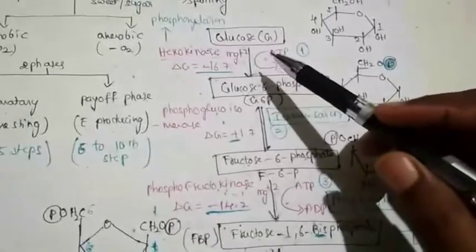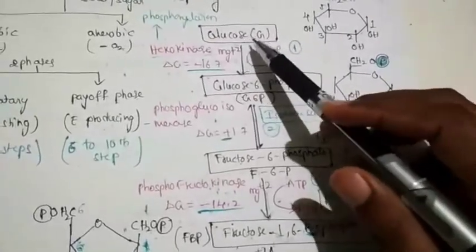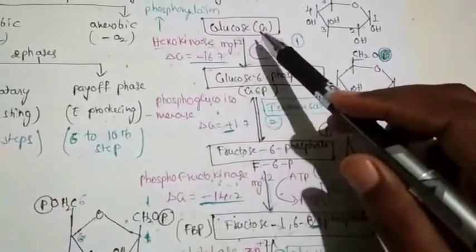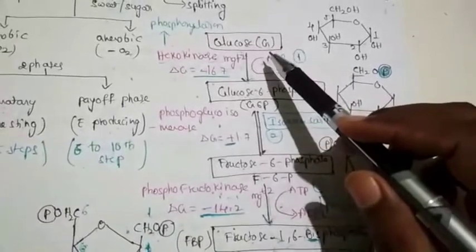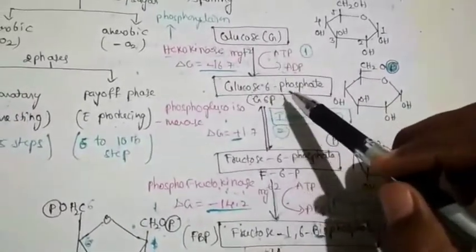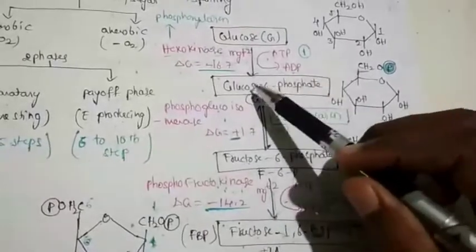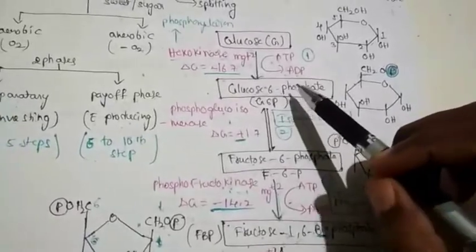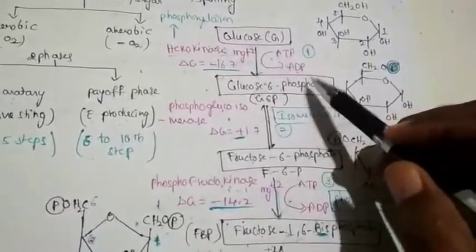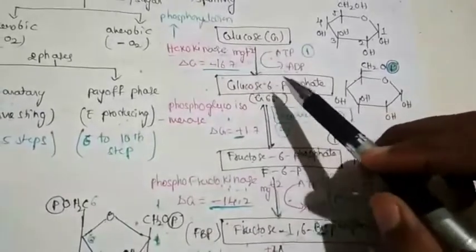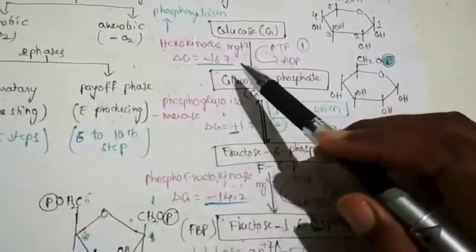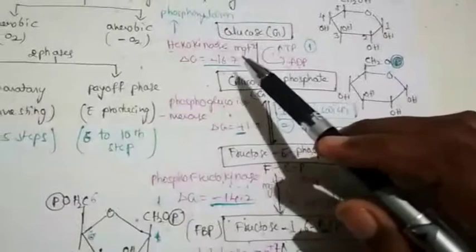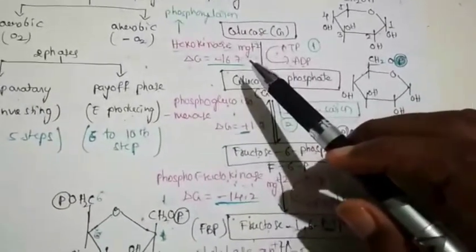In the first five preparatory phase steps, the sugar or carbohydrate used is glucose. Glucose is a six-carbon compound which is converted into glucose-6-phosphate in the first step. Glucose-6-phosphate is also a six-carbon compound but it is decorated with a phosphate group, so this step is called phosphorylation. The enzyme involved in this reaction is hexokinase, which requires magnesium ions for proper function.